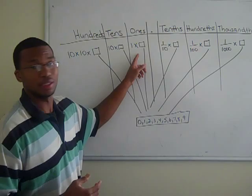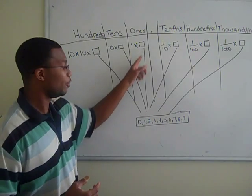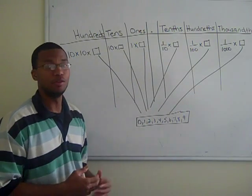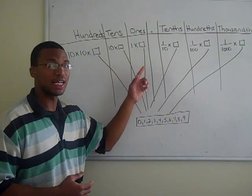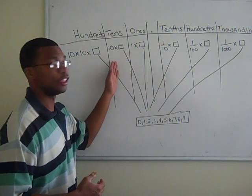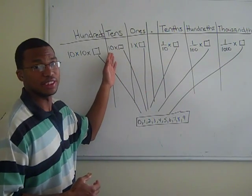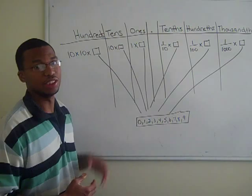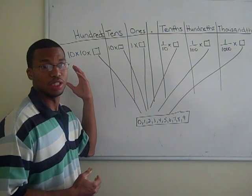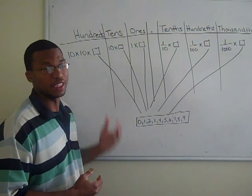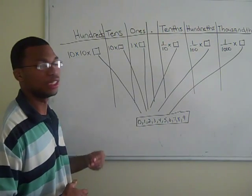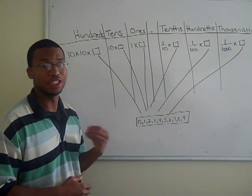Notice in the ones column, whatever your digit may be from 0 to 9, it will be 1 times that digit. As with the tens place, it will be 10 times that digit. If we were to continue going on to the left until positive infinity, you'll notice that the numbers will become larger and larger.